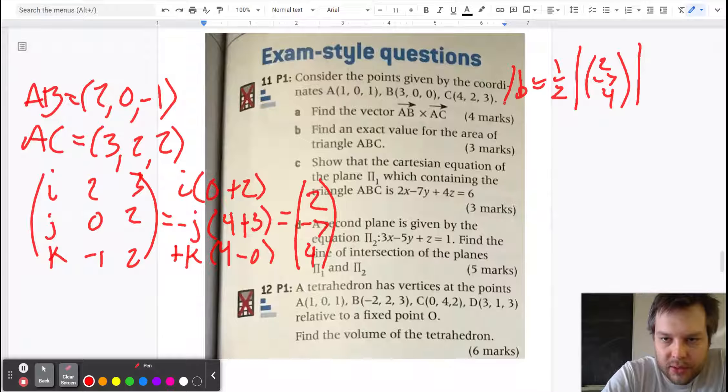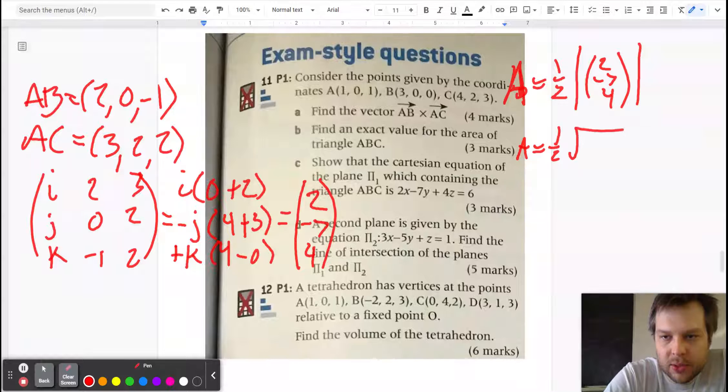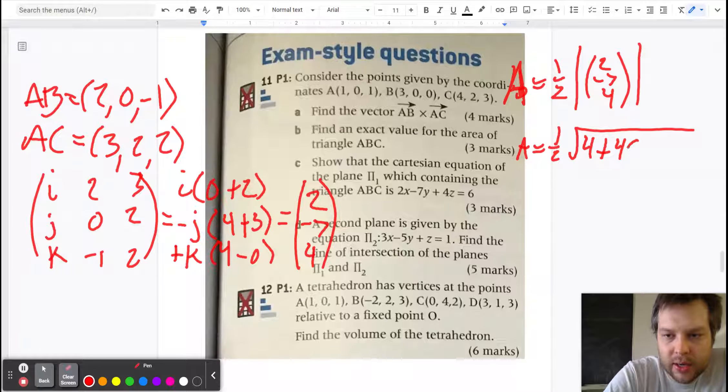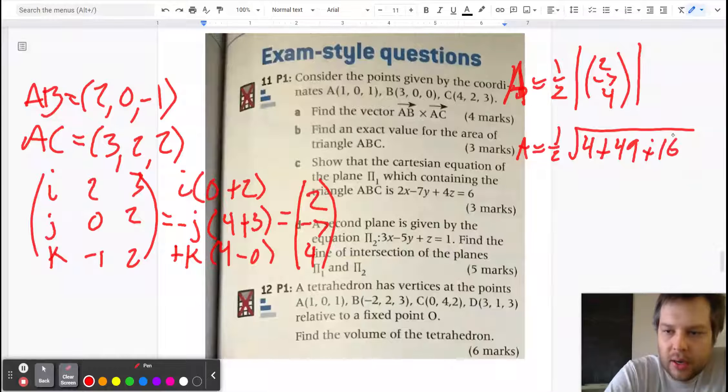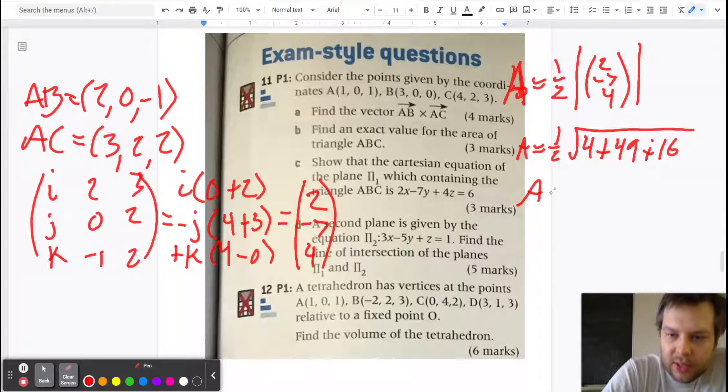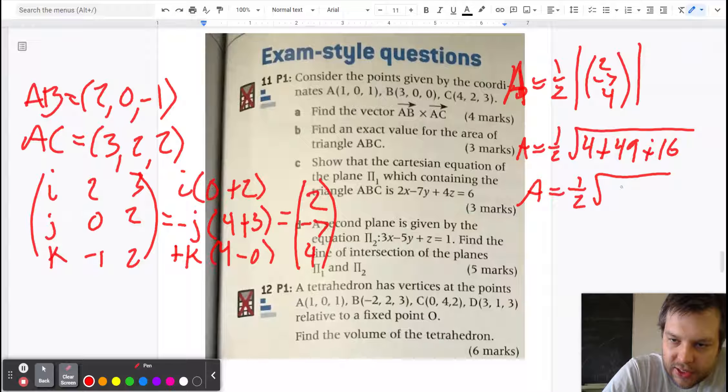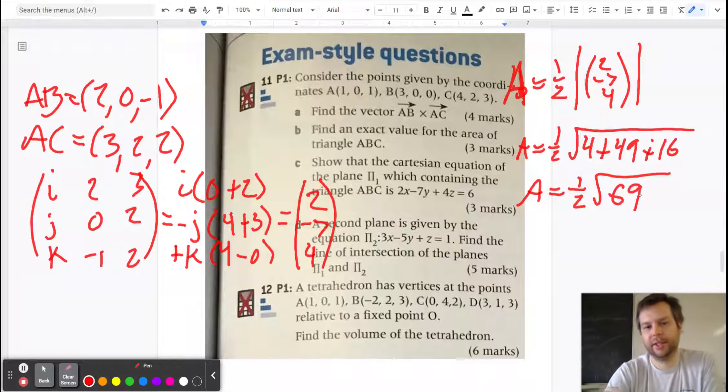So the area is going to be one half times the square root of 2 squared plus 7 squared plus 4 squared, which makes a freshman's favorite number of 69. Lovely, so that's the exact value, a half times the square root of 69.